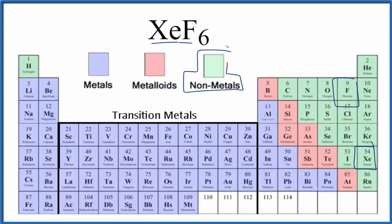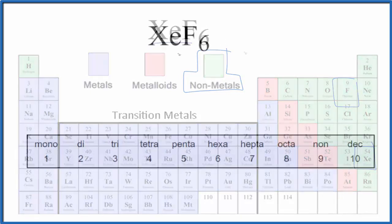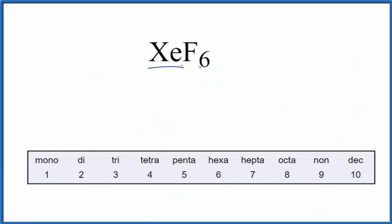So these are both nonmetals, and because of that, we're going to need to use prefixes to show the numbers when we write the name for XeF6. Let's go to the periodic table, look up Xe and then F, and we'll write the names xenon and fluorine. Notice we have a lowercase f for the second name.